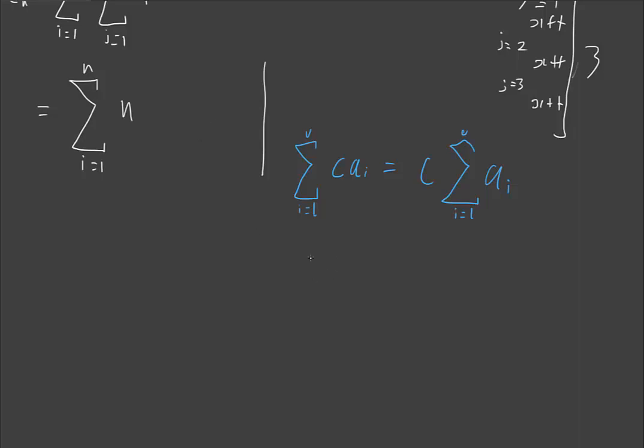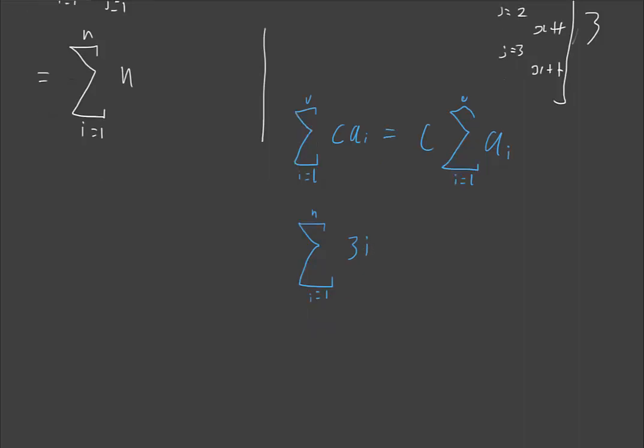So a practical example of this would be, hypothetical if we had from i equals 1 to n of 3 times i, that this is exactly the same as 3 outside of i equals 1 to n of i.